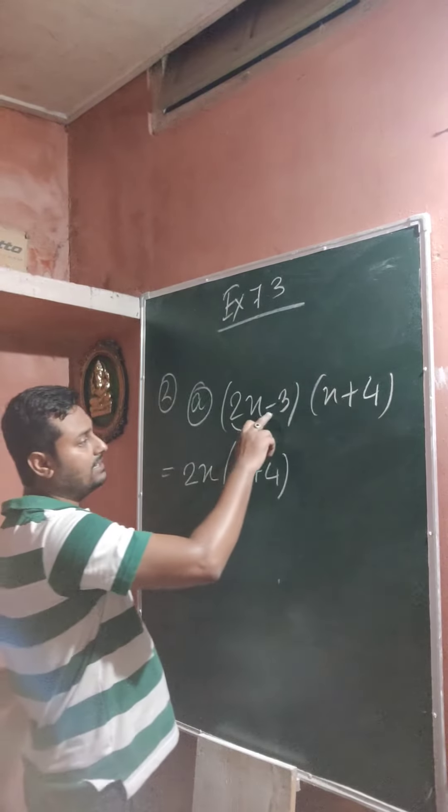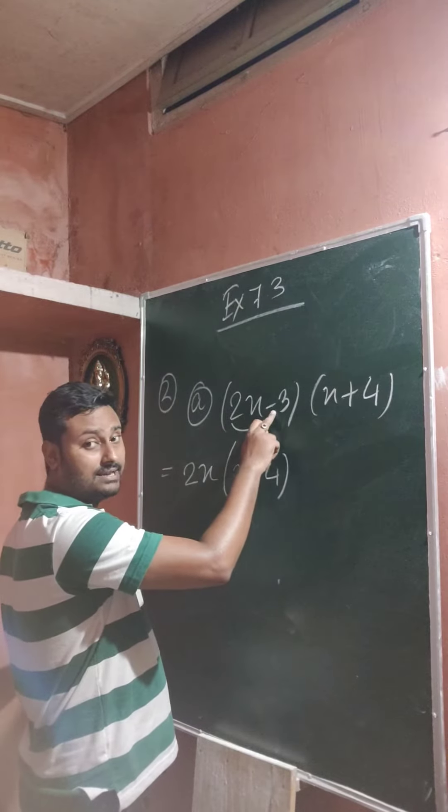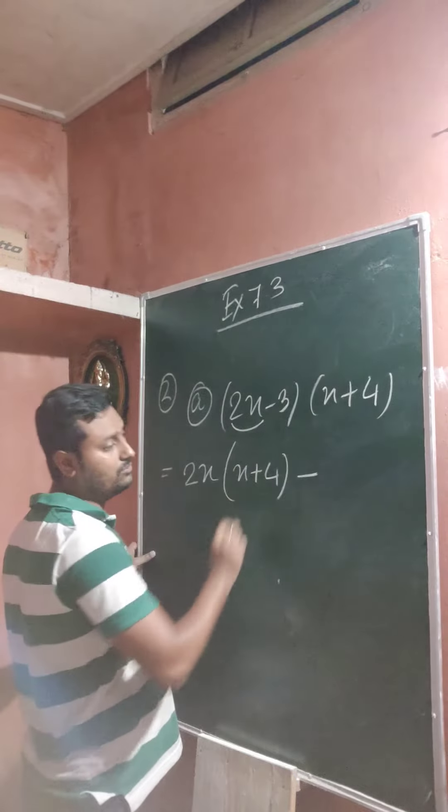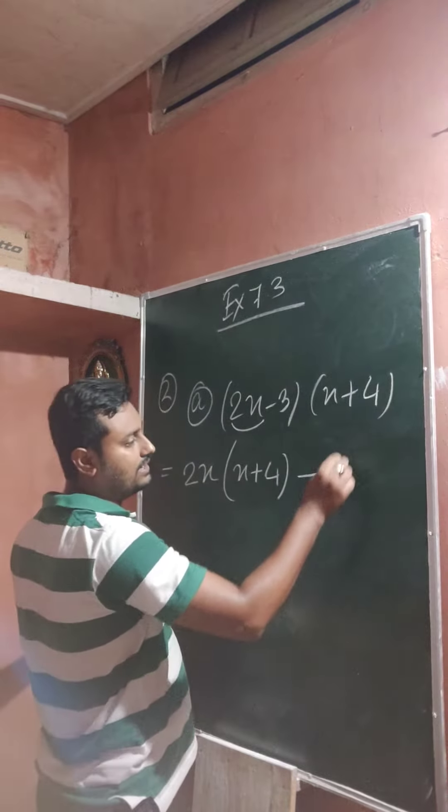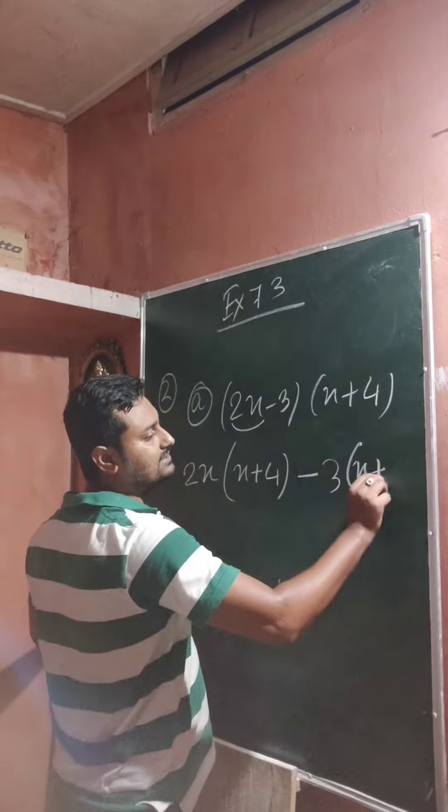Here after that this symbol, in this case minus symbol is present. So get the minus symbol. This one is 3. And you take this one, x plus 4. Clear?